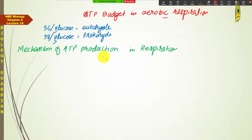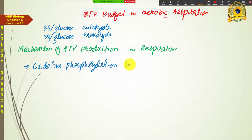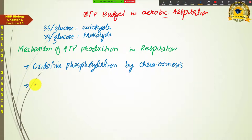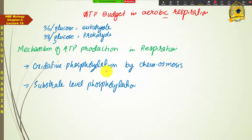ATP production occurs through two different mechanisms. The first is known as oxidative phosphorylation by chemiosmosis. The second method is known as substrate level phosphorylation. Most ATPs are produced through oxidative phosphorylation, while some ATPs are also produced through substrate level phosphorylation.